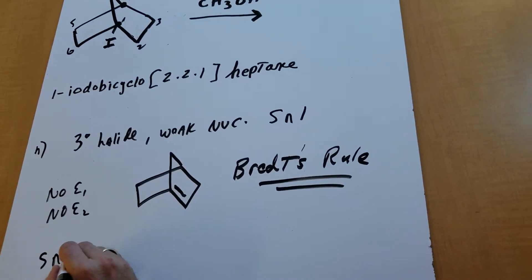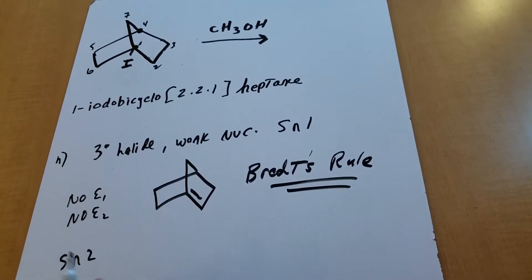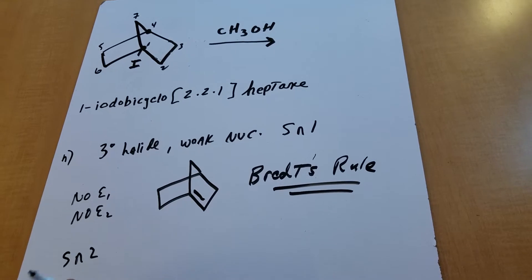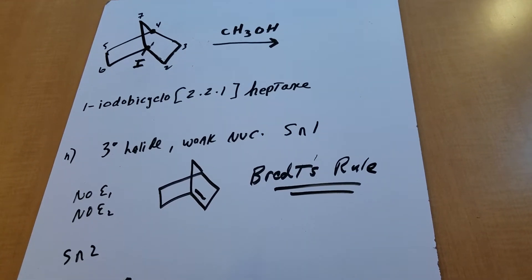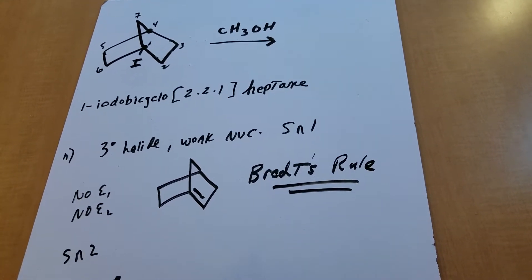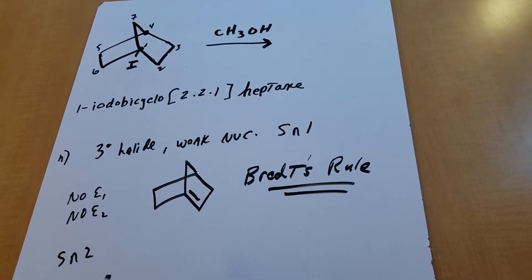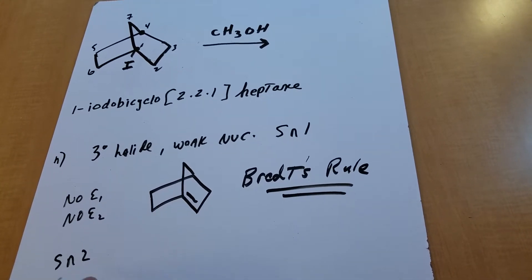How about an SN2? There's no SN2. Why not? There's no way you're going to be able to do a backside attack. Look at the size of this molecule. There's no way I'm going to come in through the backside. So it's no SN2.